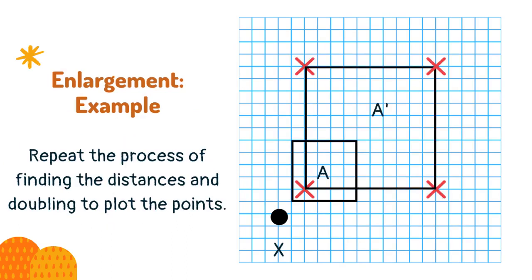Repeat the process of finding the distances and doubling to plot the points. Or if you are confident with the first point, draw the shape using lines that are twice the length of the original.